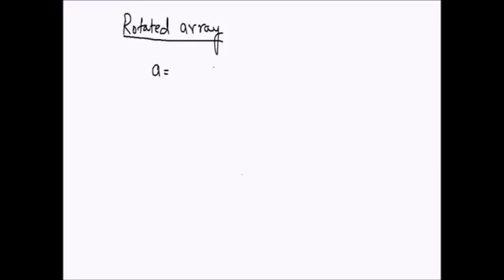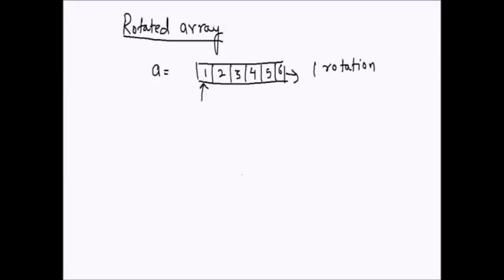Today we will be discussing another problem on sorted arrays. The only difference between other problems and this problem is that the sorted array is a rotated array. First, let's see what a rotated array is. If I rotate an array by one, that means I take the last element out, put it in the first place, and shift all the elements by one position.